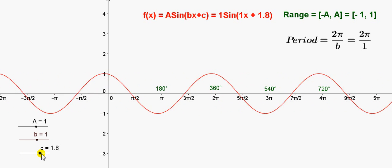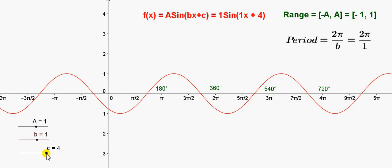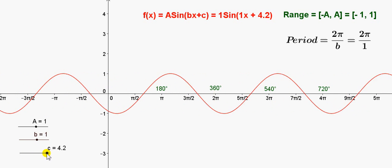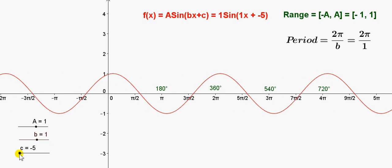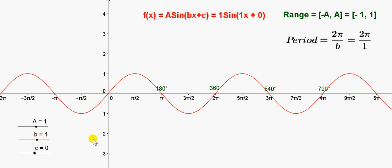Actually, increasing c shifts the graph to the left. Decreasing c shifts the graph to the right. By the way, c is in radians. So when we say the period is 2π over b, we are assuming that angle x is in radians.